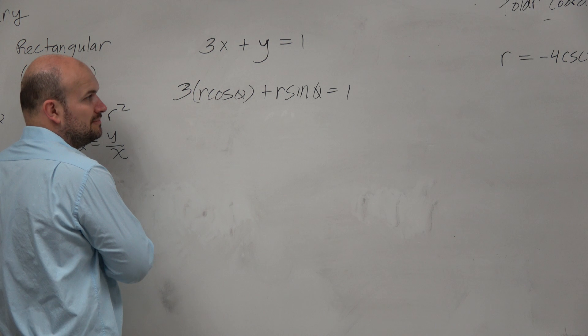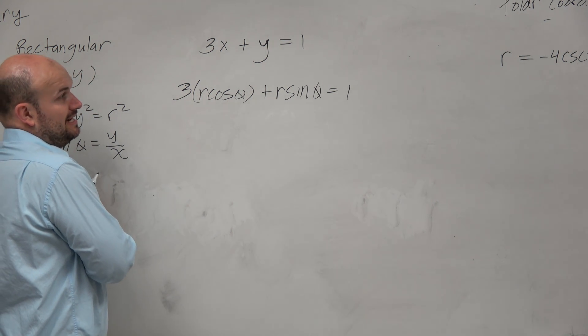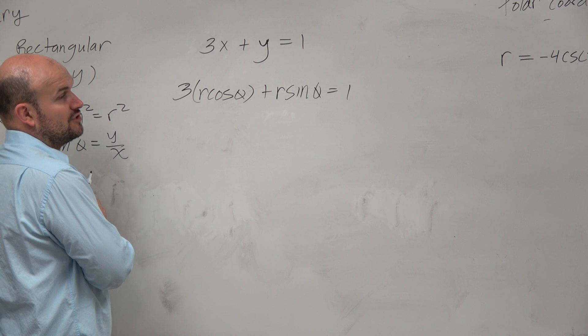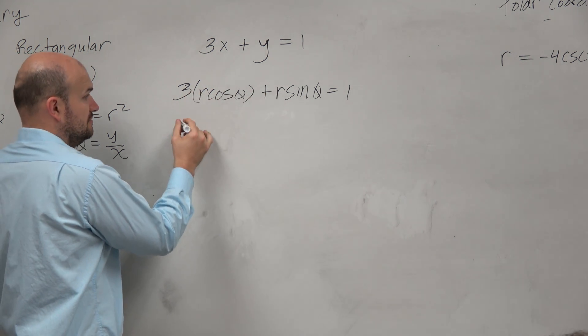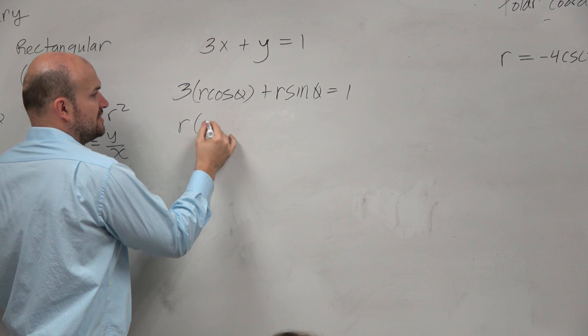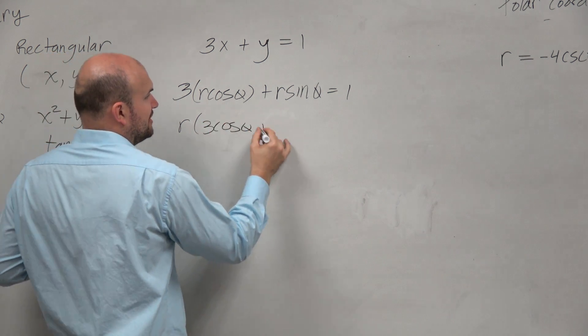So if we can't combine them, we could maybe, rhymes with tractor and starts with an f? Factor. Factor. Can we factor out an r? We could factor out an r. Factor out an r, we're left with 3 cosine theta plus sine of theta.